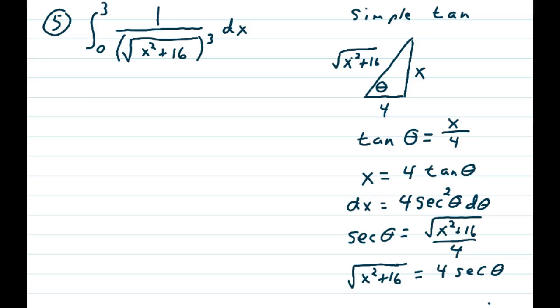θ, the opposite side being x, and the adjacent side being 4. Using the Pythagorean theorem, I get √(x²+16), which is precisely what I want to have.